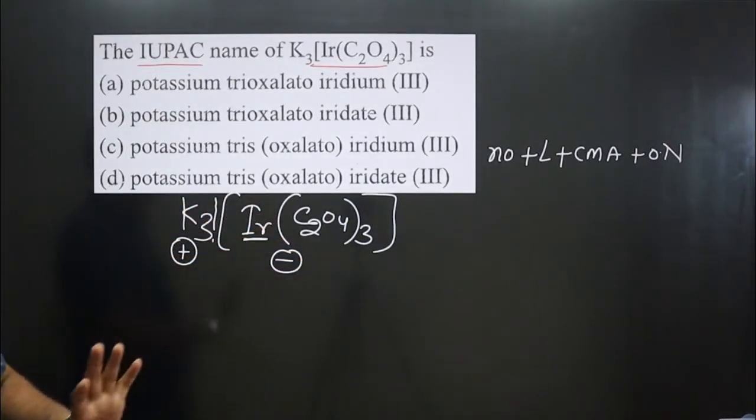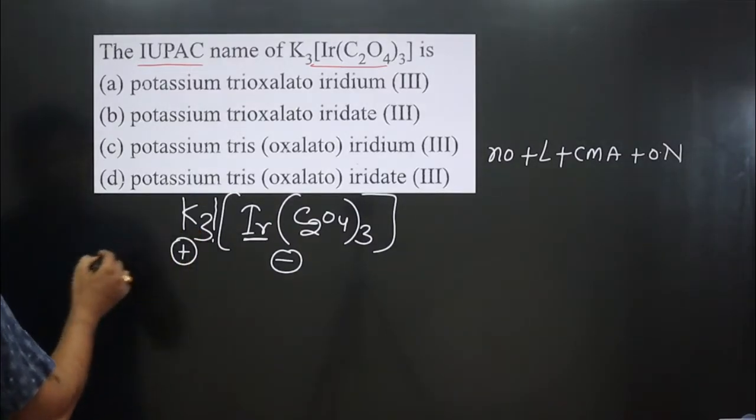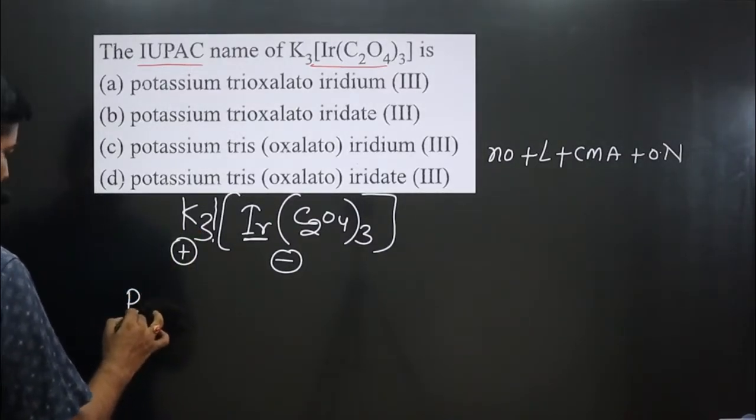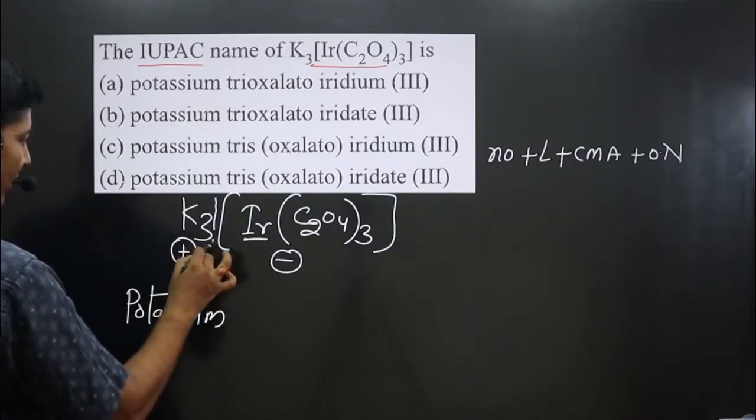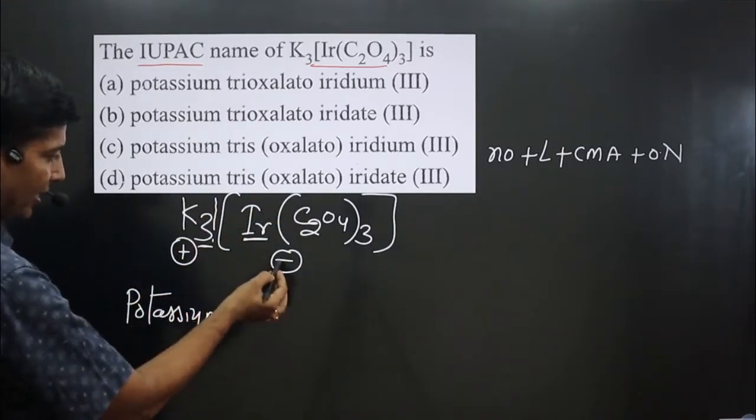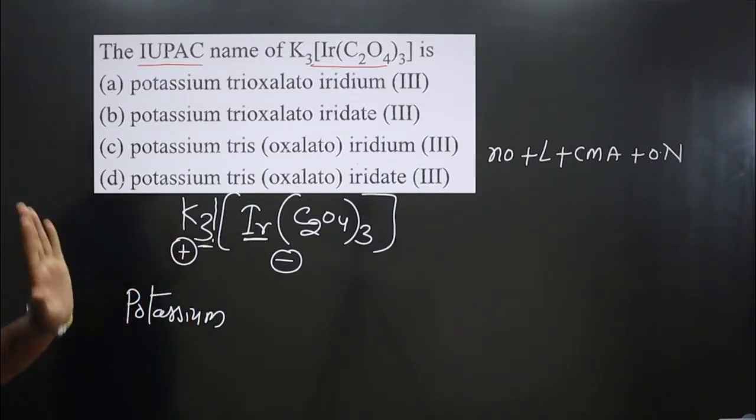This is the cationic part, so we have the counter ion potassium. Why do we not write tri-potassium? Only potassium. These three we are getting by balancing the charge of cationic as well as anionic portion. So we do not include the three, only the name for the counter ion.